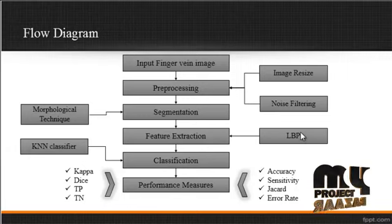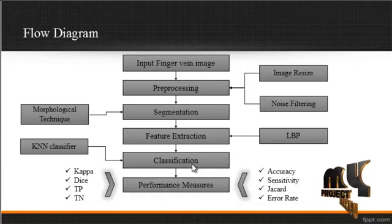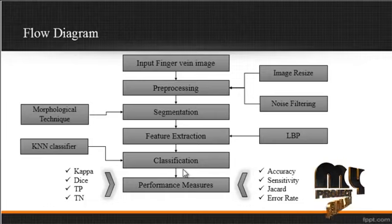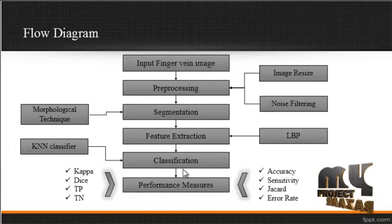The LPP method is used to extract feature points. After extracting the feature points, classification is performed using the KNN method to classify whether the input is normal or abnormal. The classification step takes three inputs: the test feature, the train feature, and the target, which indicates whether the input is normal or abnormal.